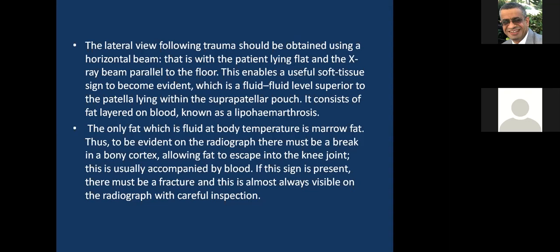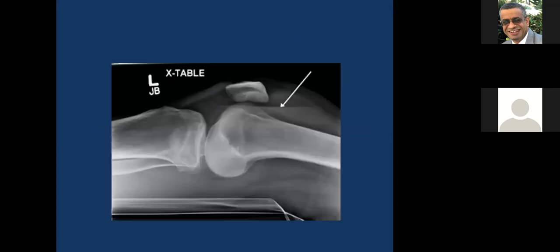The fluid level consists of fat layered on blood, known as lipohemarthrosis. The only fat which is fluid at body temperature is marrow fat. Thus, to be evident on the radiograph, there must be a break in a bony cortex allowing fat to escape into the knee joint, usually accompanied by blood. If this sign is present, there must be a fracture. This is the sign of a fluid level — the fat above and the blood below: lipohemarthrosis.